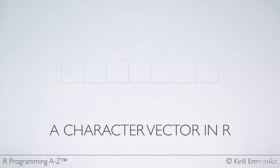Let's have a look at a character vector of length 7. A character vector would have character elements in it, and we've already talked about character variables. There's letter Z, and of course it has to have quotation marks as any character value, letter F, or the number 7 but represented as a character. Remember that a vector can only have data elements of the same type, so even if you tried to put in a 7 as a number into a character vector, R would automatically change it into a character. This is a character vector of length 7.